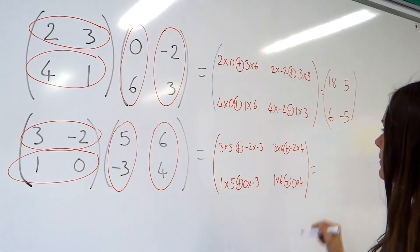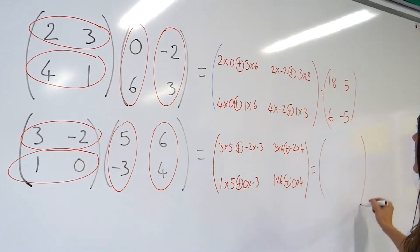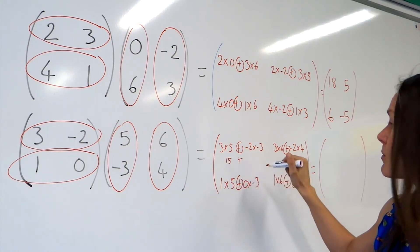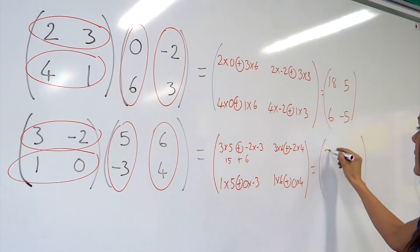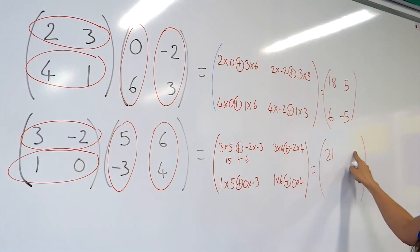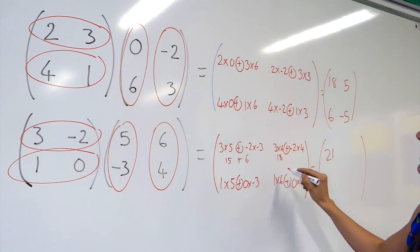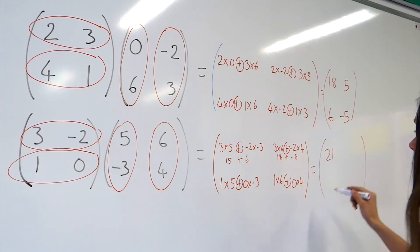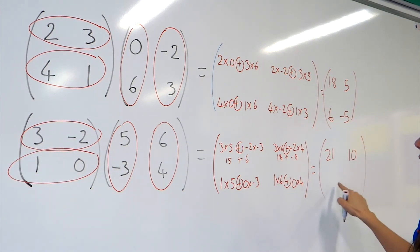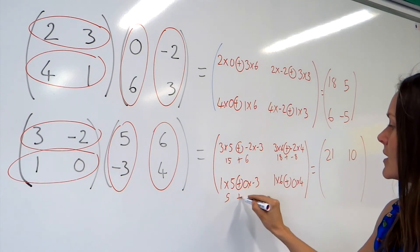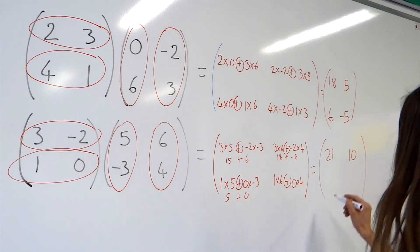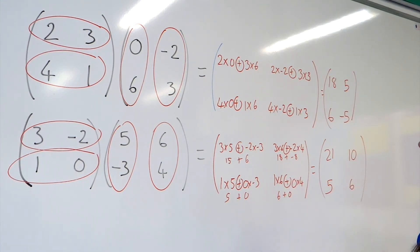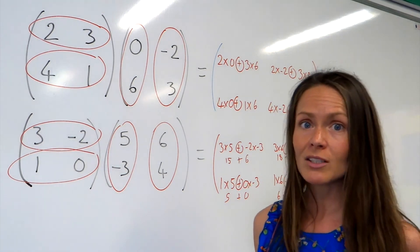Don't forget to actually work it out — we can't leave it like that. So, 3 times 5 is 15, and minus 2 times minus 3 is 6, so 15 plus 6 gives me 21. For the top right, 3 times 6 is 18, minus 2 times 4 is minus 8, so 18 plus minus 8 is 10. For the bottom left, 1 times 5 is 5, and 0 times minus 3 is 0, so that stays as 5. And for the last one, we've just got 6. So there's multiplying 2 by 2 matrices.